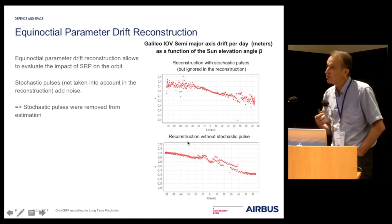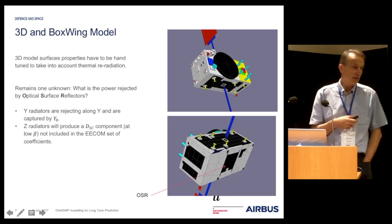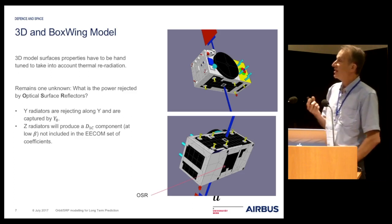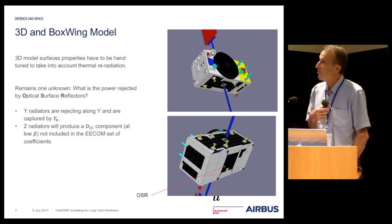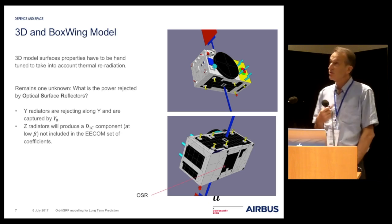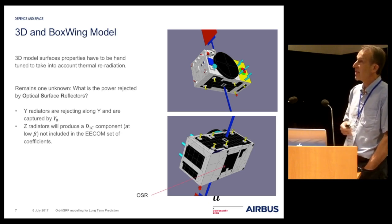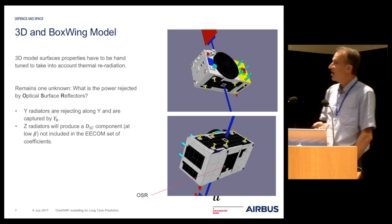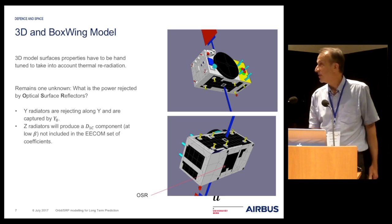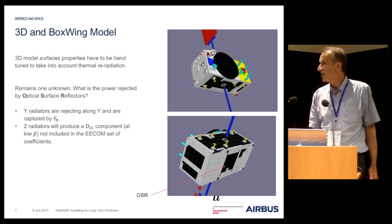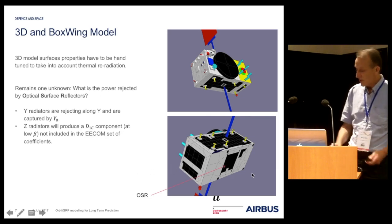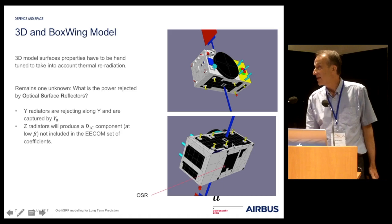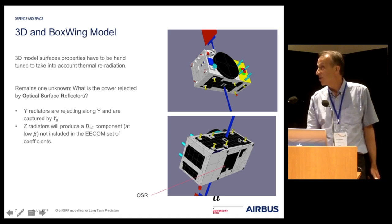Next, we tried to make a 3D model of the Galileo FOX satellite. We obtained a very detailed 3D model, and what we did first was to tune the material characteristics in order to take into account the thermal radiation. One question remains: what is the amount of power emitted by the radiators on the spacecraft? There are radiators on the X-face in the anti-sun direction, on the minus Z-face, and on the Y-face. The Y-face radiator's impact is captured by the Y0 parameter of the ECCOM model.